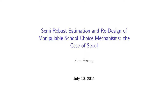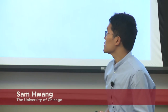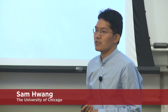Hello, everyone. My name is Sam Hwang. In structural estimation, it is common practice to assume that the data is coming from players playing Nash equilibrium. A well-known example of that is estimation of first price auction models. But in some applications, the equilibrium assumption — the assumption that players are playing equilibrium strategy — might not be appropriate.